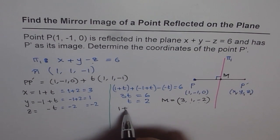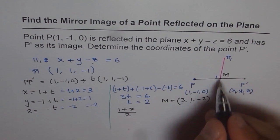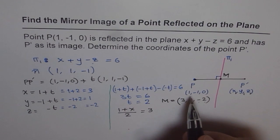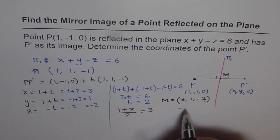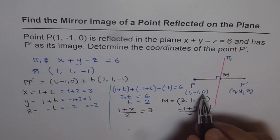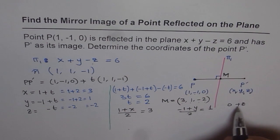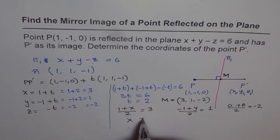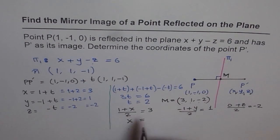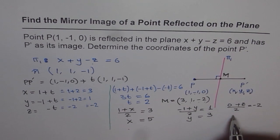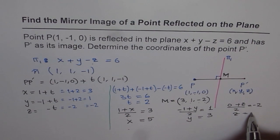Setting up the midpoint equations: (1 plus x1) divided by 2 equals 3 for the x-coordinate; (minus 1 plus y1) divided by 2 equals 1 for the y-coordinate; and (0 plus z1) divided by 2 equals minus 2 for the z-coordinate. Solving: x1 equals 6 minus 1 equals 5; y1 equals 2 plus 1 equals 3; z1 equals minus 4.